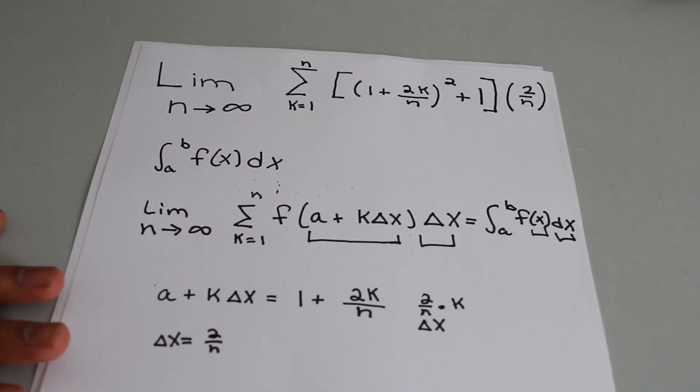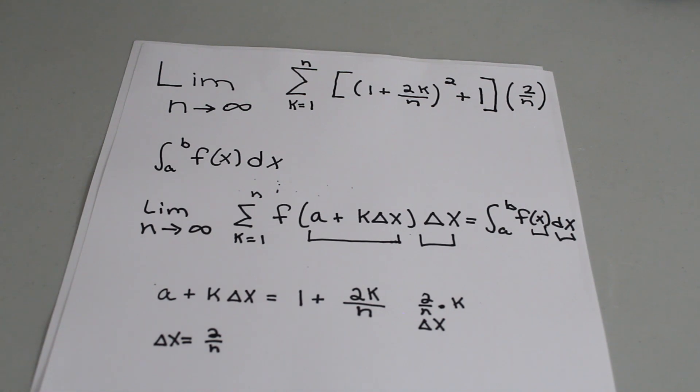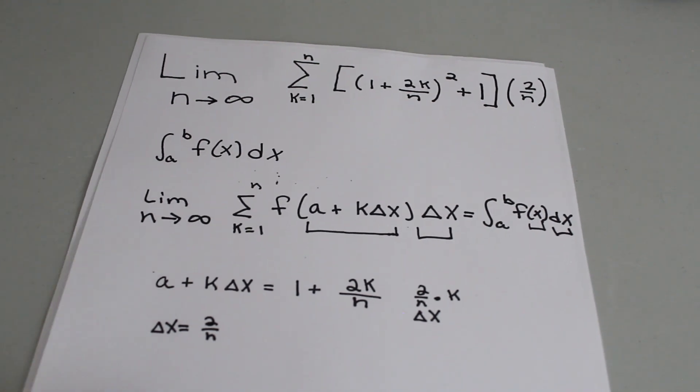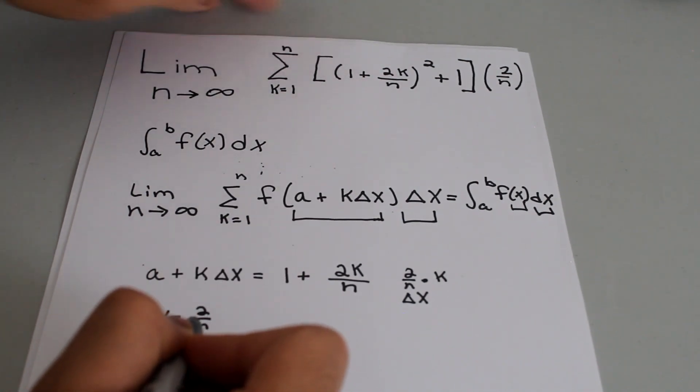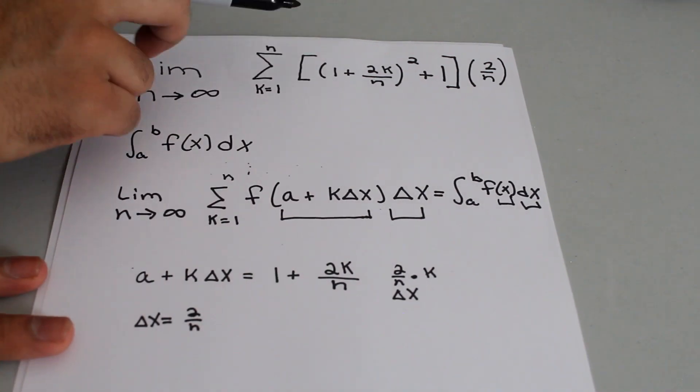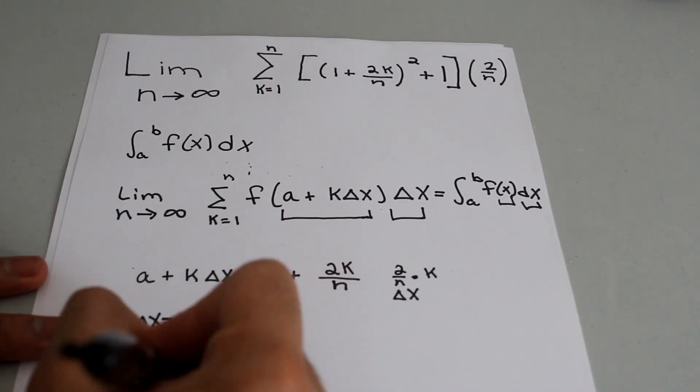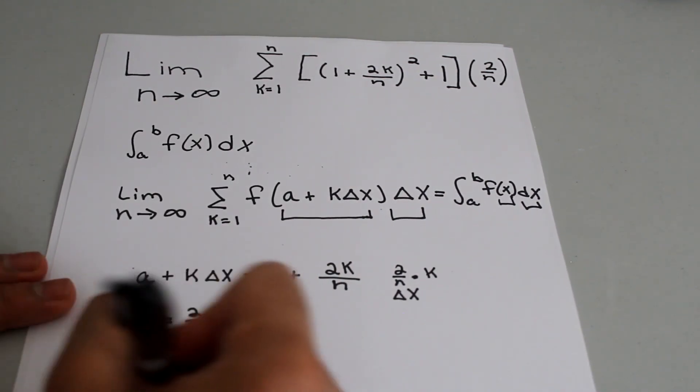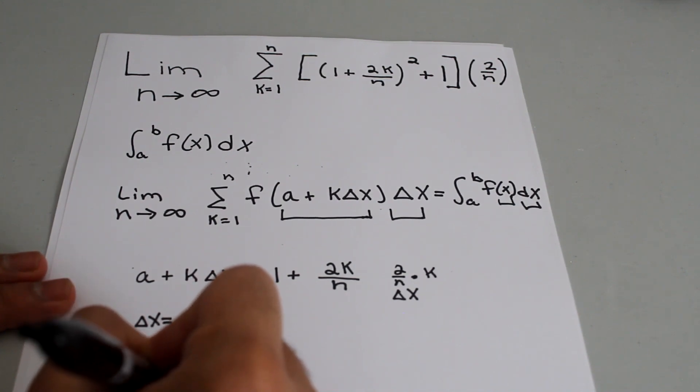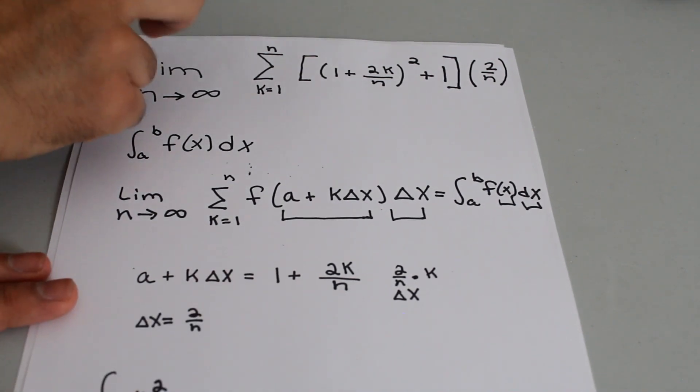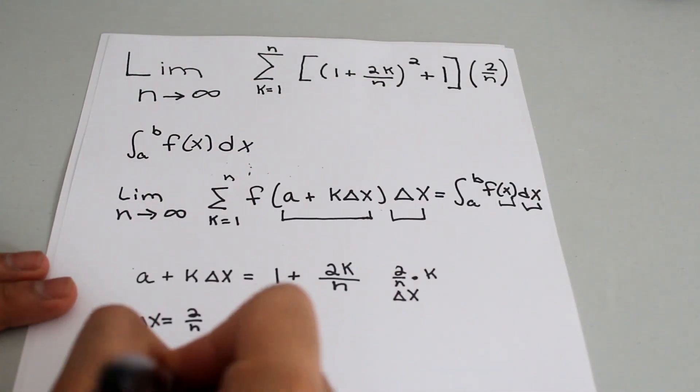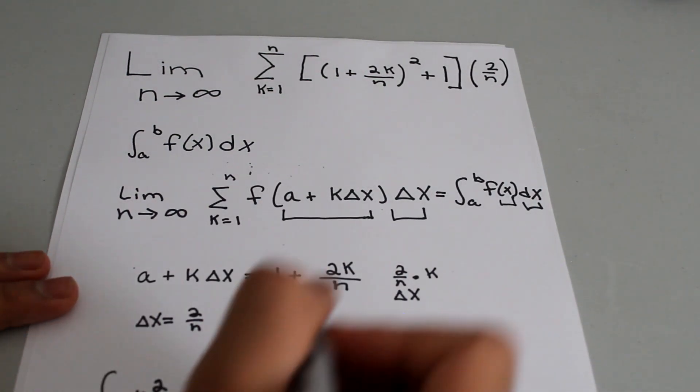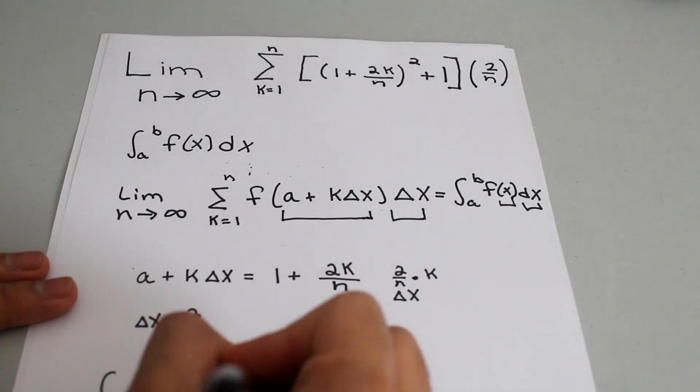Now if we want to replace this entire quantity with x, we notice that this entire quantity is inside a parenthesis. So that means since this was raised to the second power, the integral x would be raised to the second power and the plus 1 that's inside the bracket just stays. And then this delta x just becomes dx.